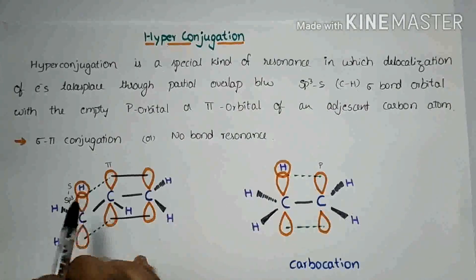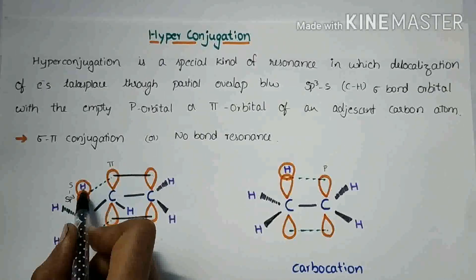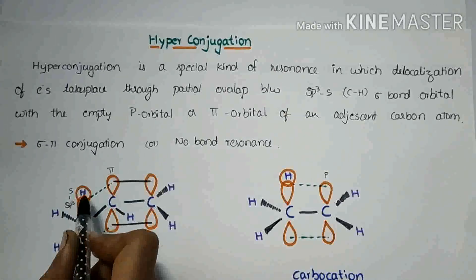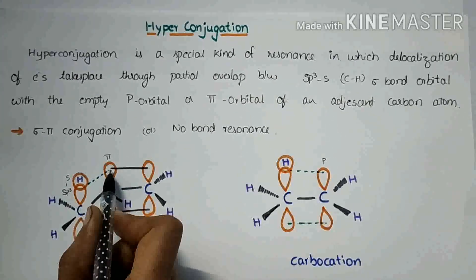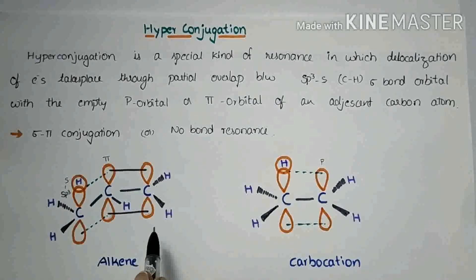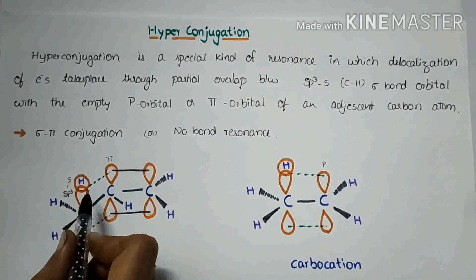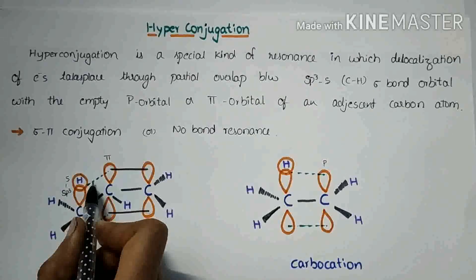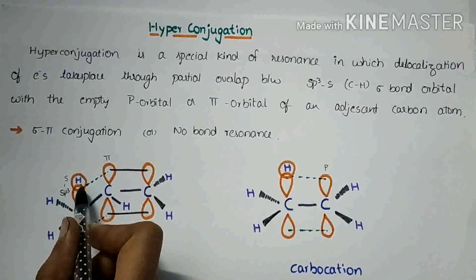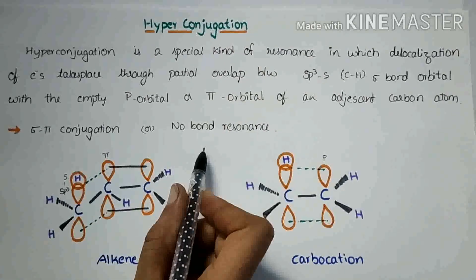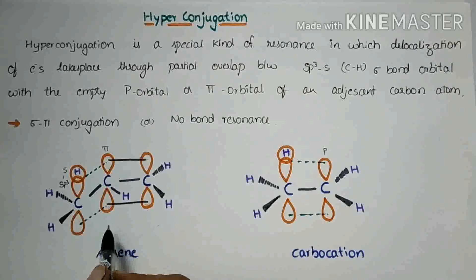This effect is also known as sigma-pi conjugation, because the delocalization of electrons takes place between sigma bond orbital and pi orbital. It is also known as no bond resonance, because after delocalization of electrons there will be no bond between C and H. This effect is also known as Baker-Nathan effect.